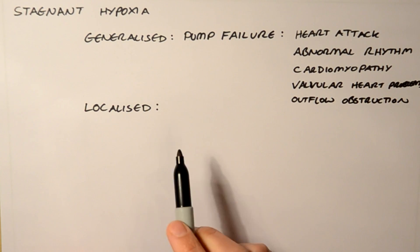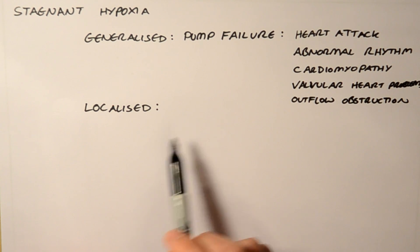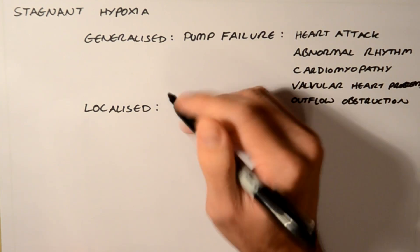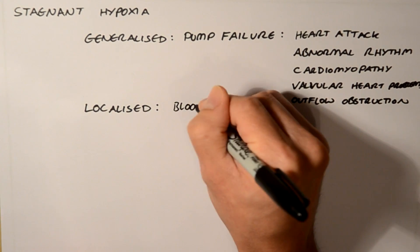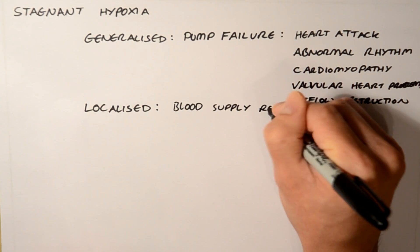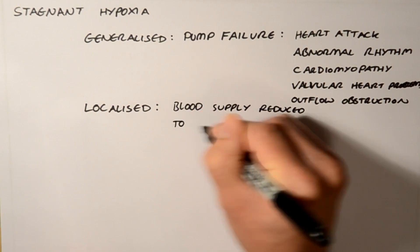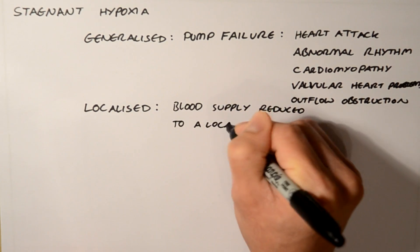Then you can have stagnant hypoxia where it's localised. This is where the blood supply is interrupted or reduced to a local area.